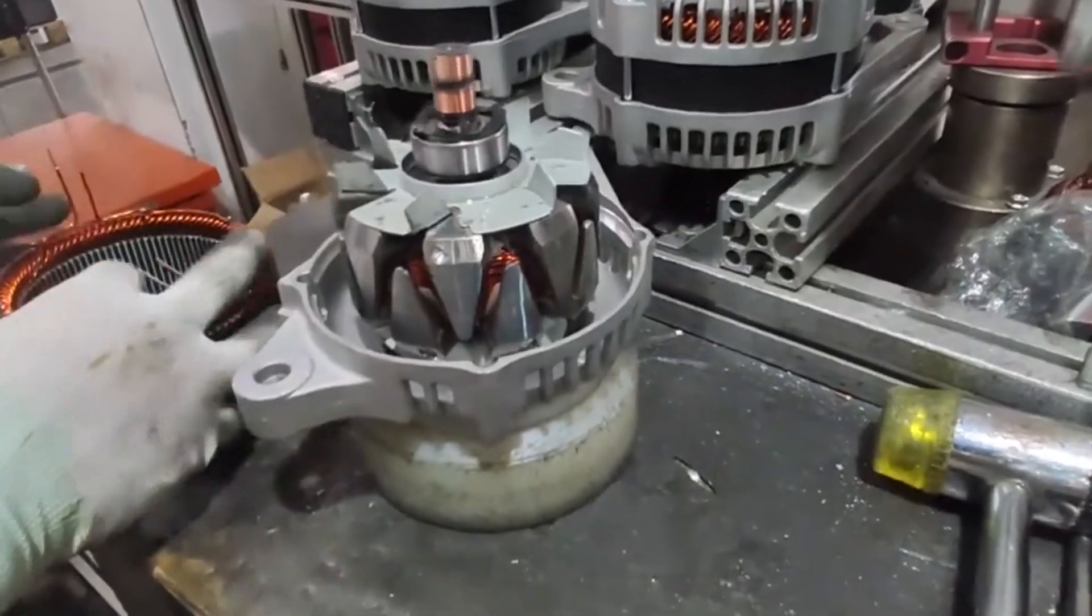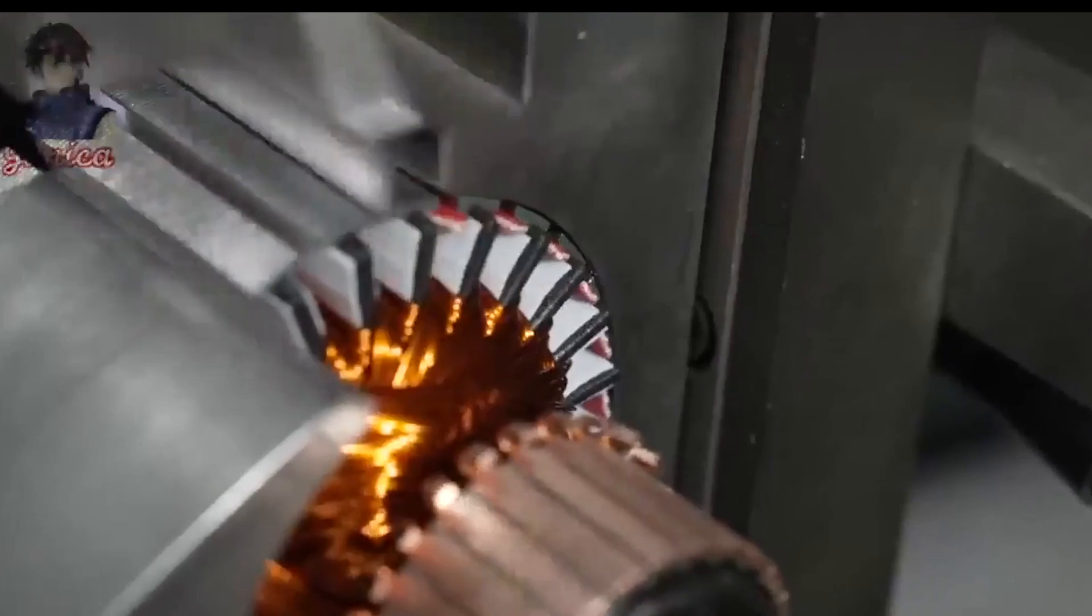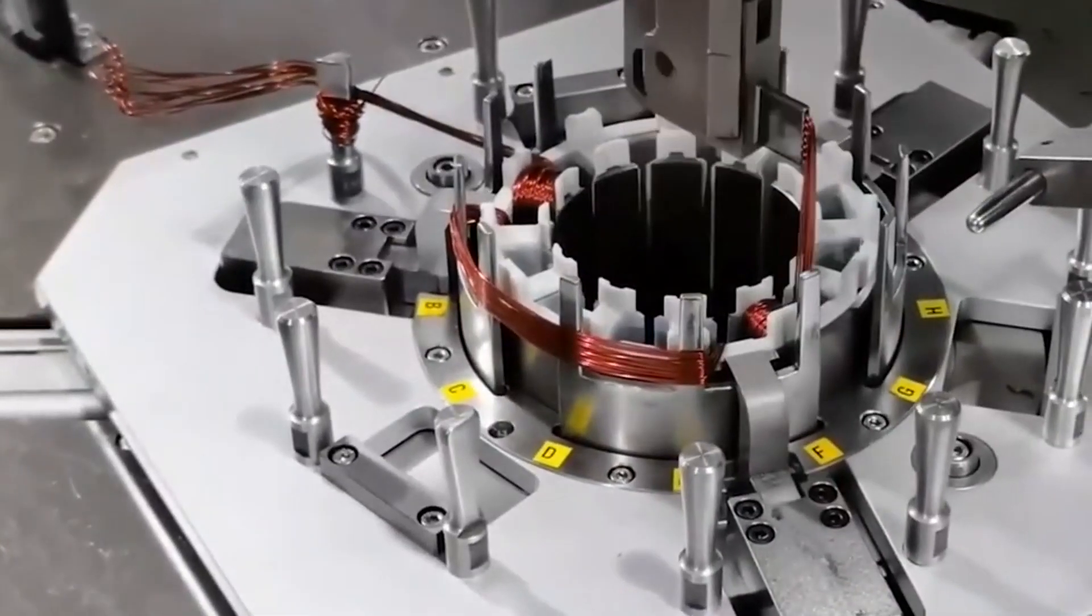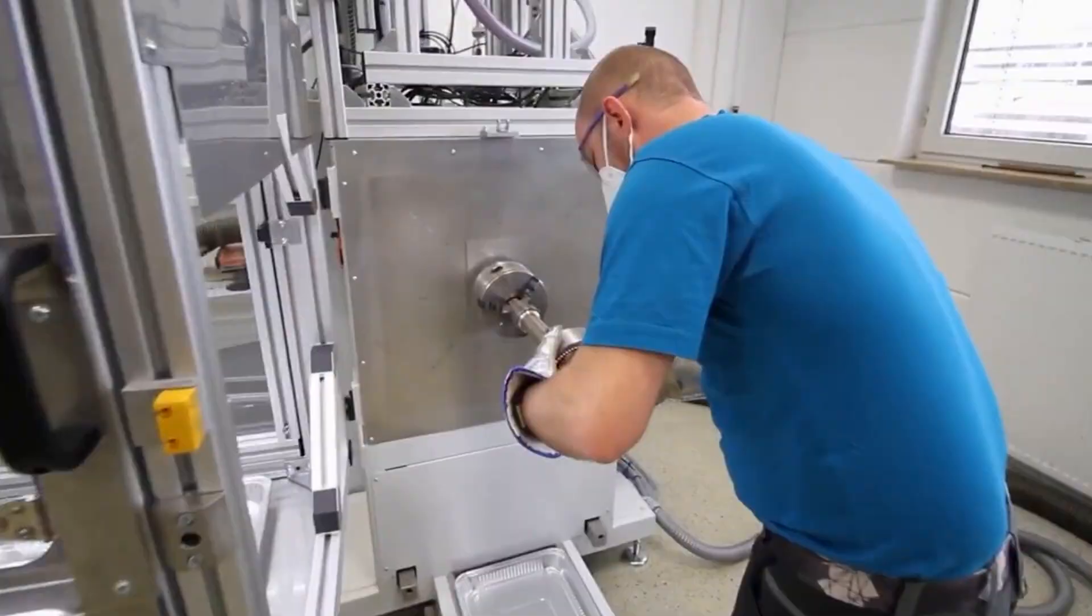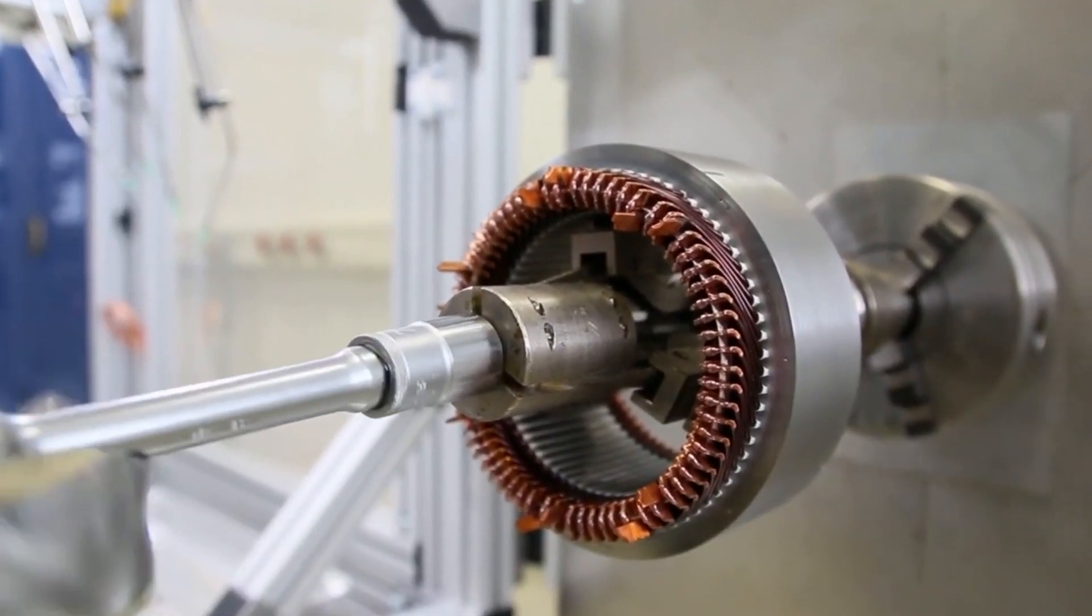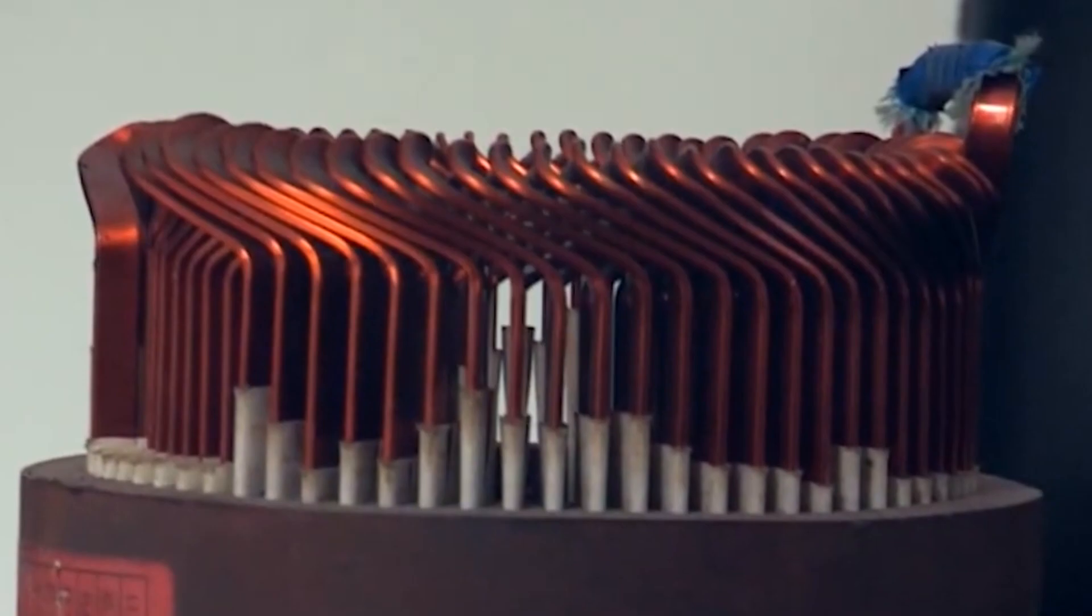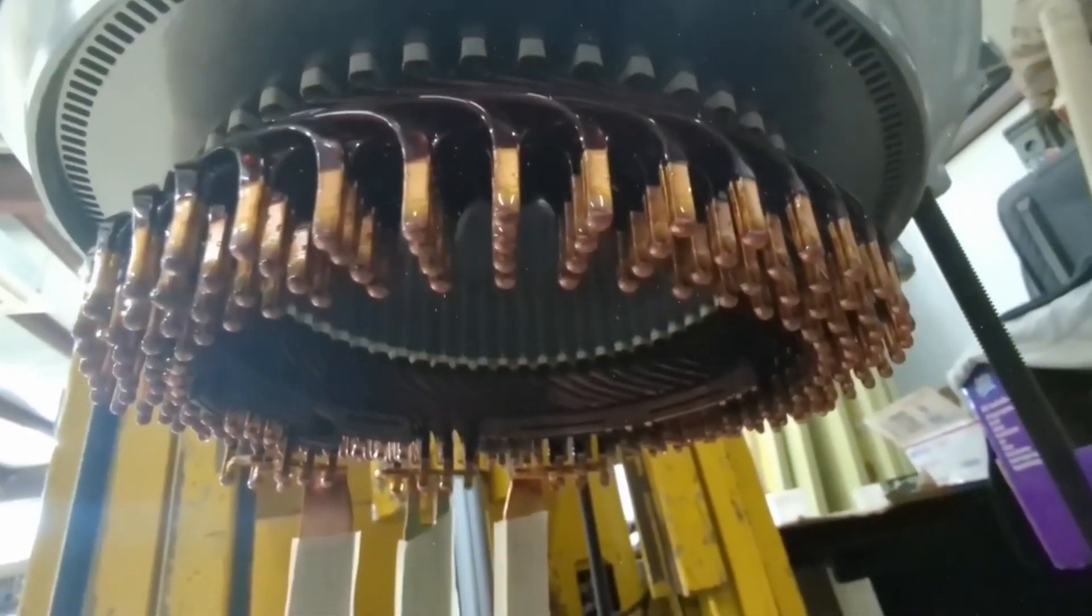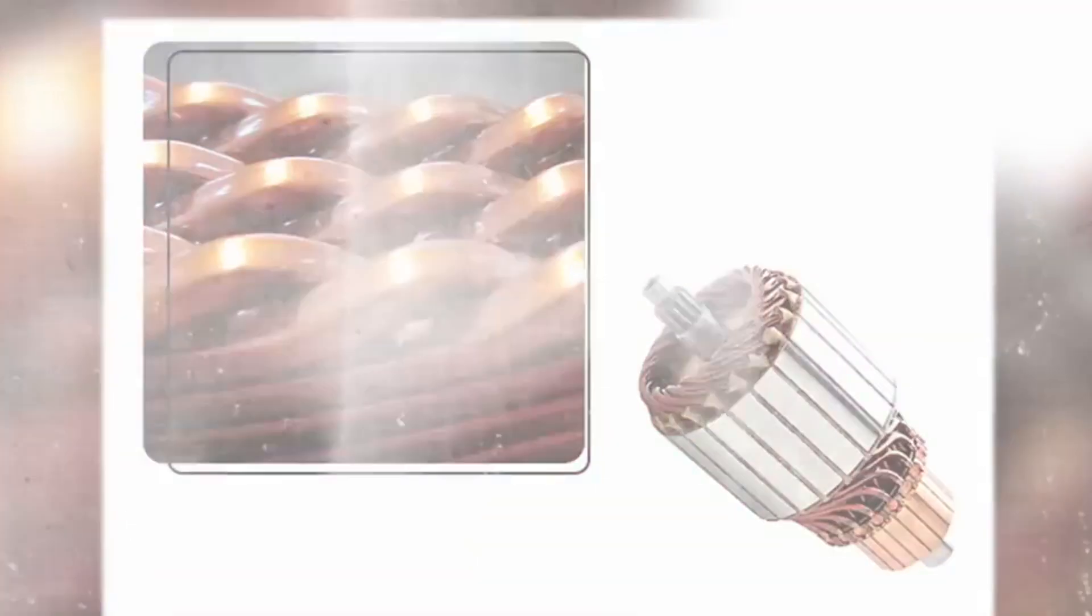When comparing hairpin motors to traditional roundwire motors, one potential disadvantage is an increase in loss. This is because the flat wire used in hairpin motors is thicker than the round wire used in traditional motors, which can lead to higher AC copper loss. However, this increase in loss is limited and can be mitigated through careful electromagnetic design. The increase in loss is particularly noticeable at higher frequencies. Factors that affect the impact of loss include the height of the slot, the size of the flat copper wire, and the magnetic density amplitude in the slot.